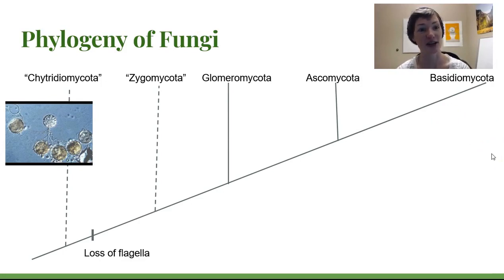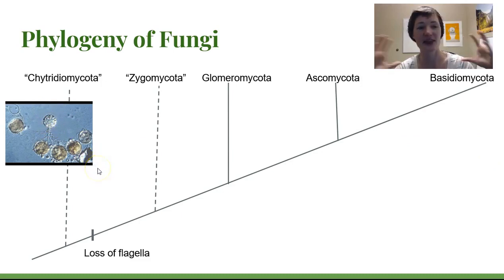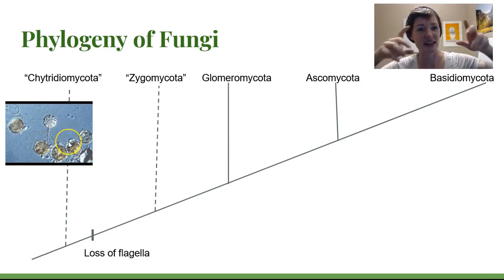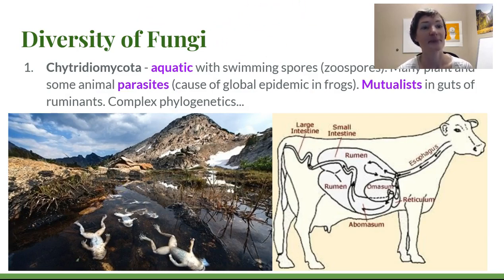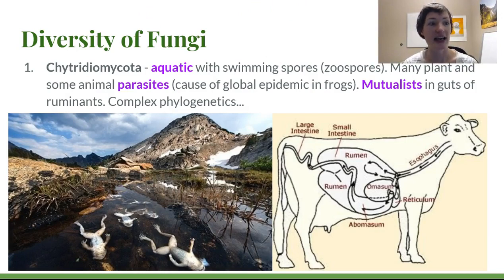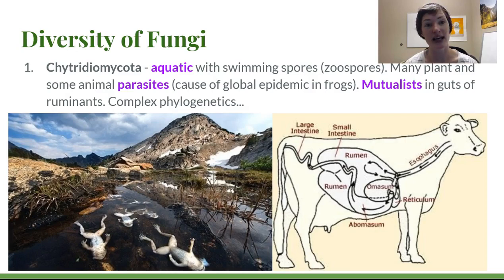The first group we'll look at is the Chytridiomycota — also called Chytridiomycetes or chytrids. Some have a large globose thallus, which is an undifferentiated body where they make their spores, serving as their sporangium. They also have root-like structures called rhizoids. Chytridiomycota are aquatic and have swimming spores — this is the only group we'll look at that still has flagella; all other groups will have lost them. Many are plant parasites, including some that have moved into terrestrial environments, and some are animal parasites.